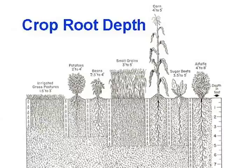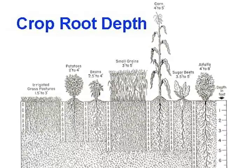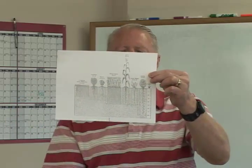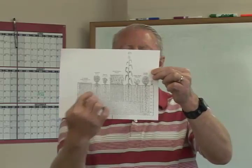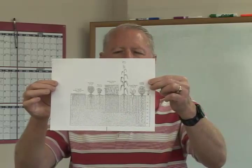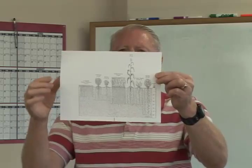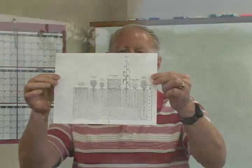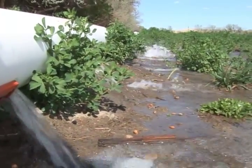They cannot get the water anywhere else. Sometimes we make the mistake of thinking we can put on a whole bunch of water and the soil will save it there. No — that extra water just percolates down past the root zone, and it is physically impossible for those roots to get that water once it goes past the root zone. So we have to be very conscious about the rooting depth — the root zone of the plants we're irrigating — and only put on the water that they need in their root zone.